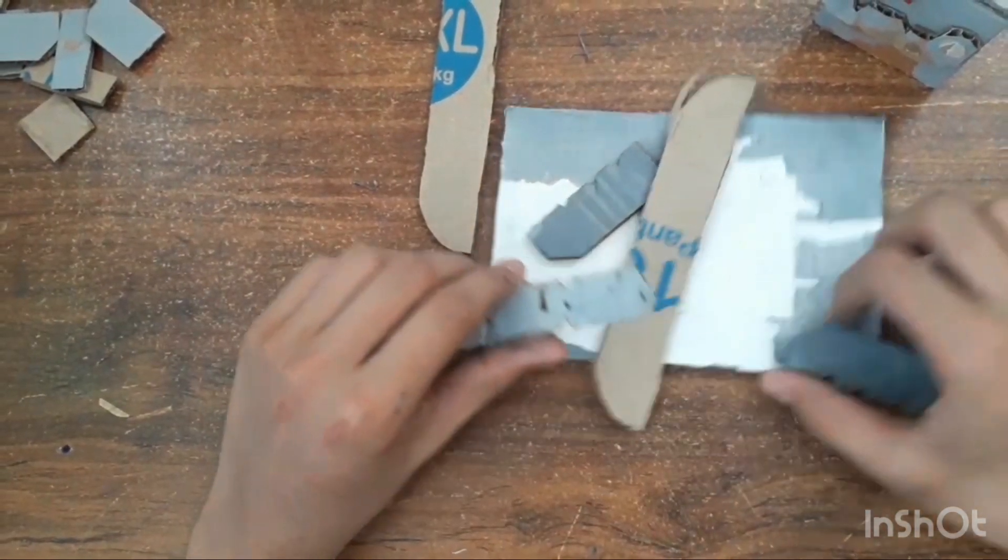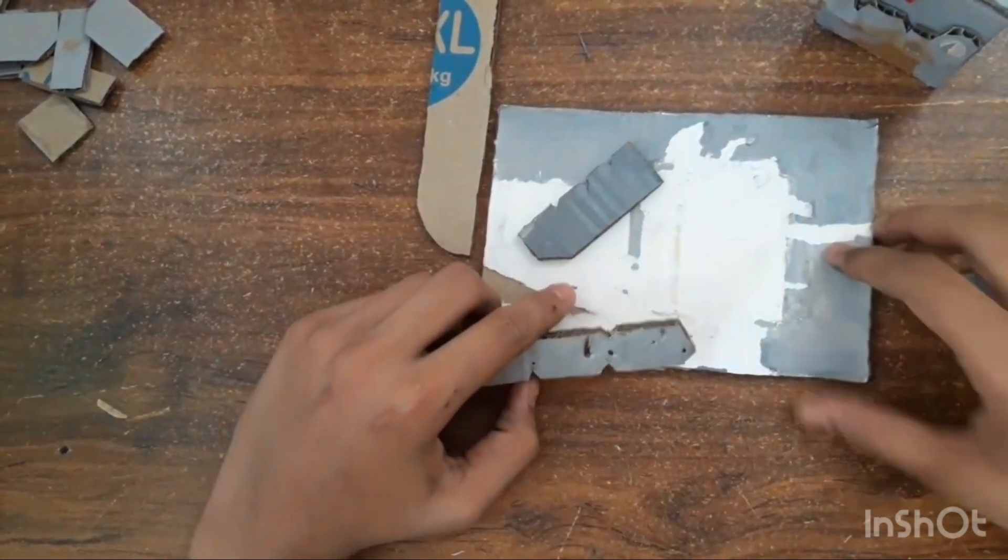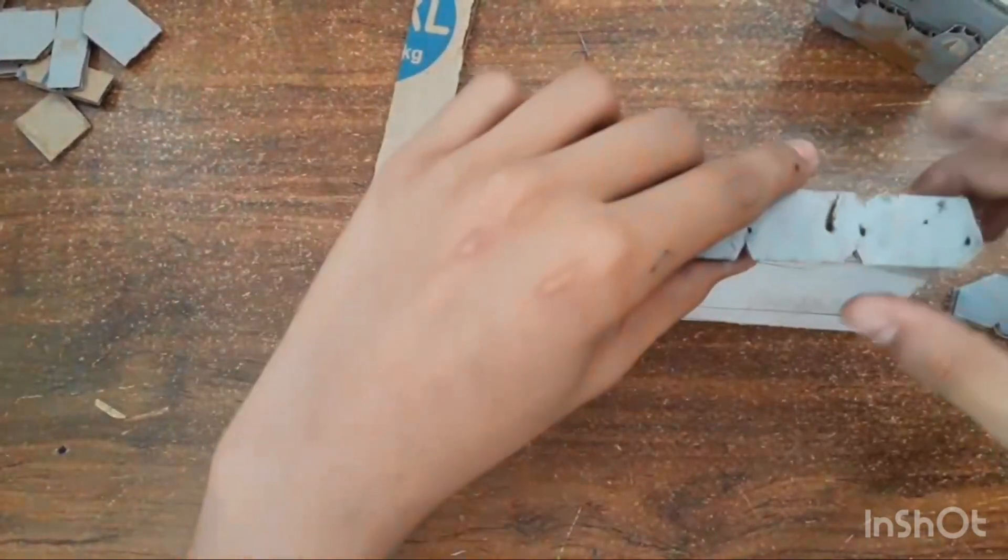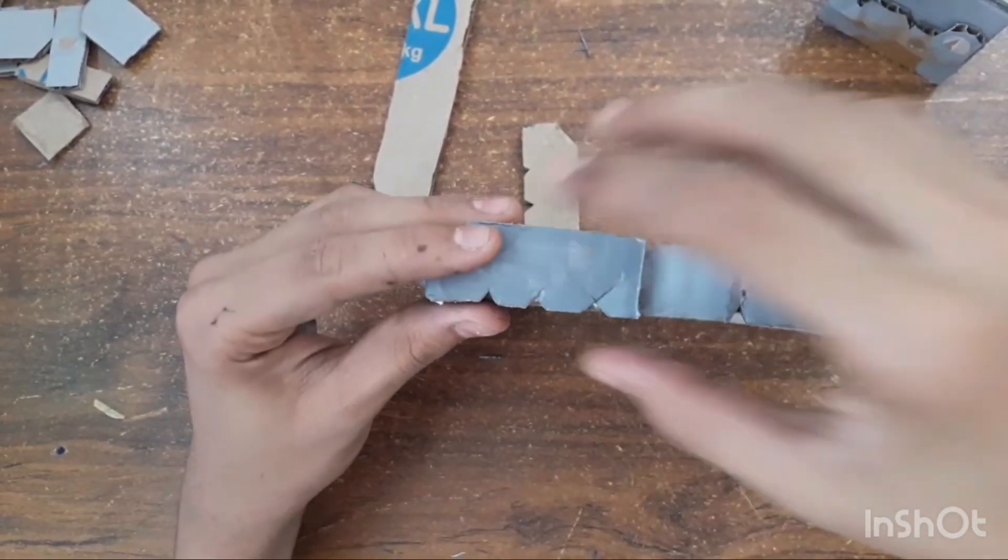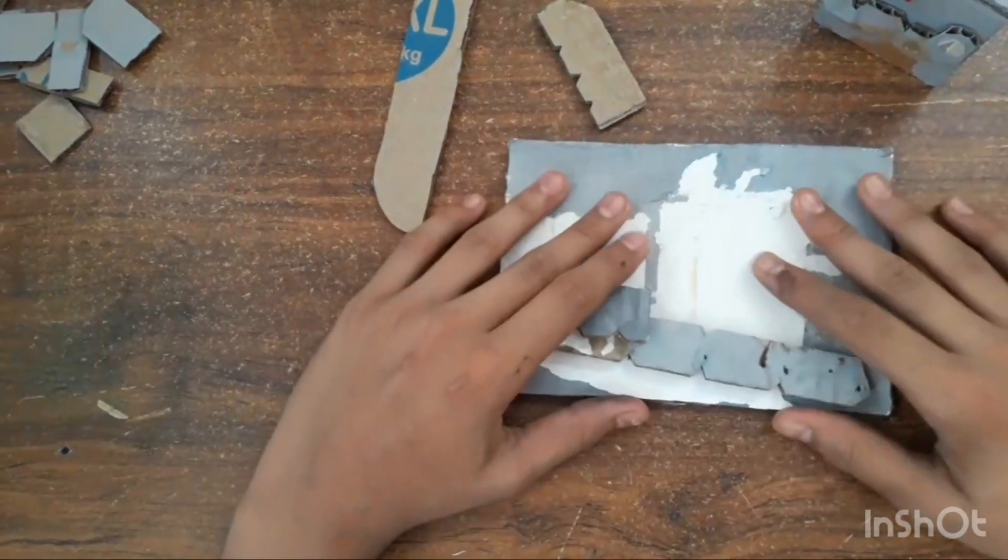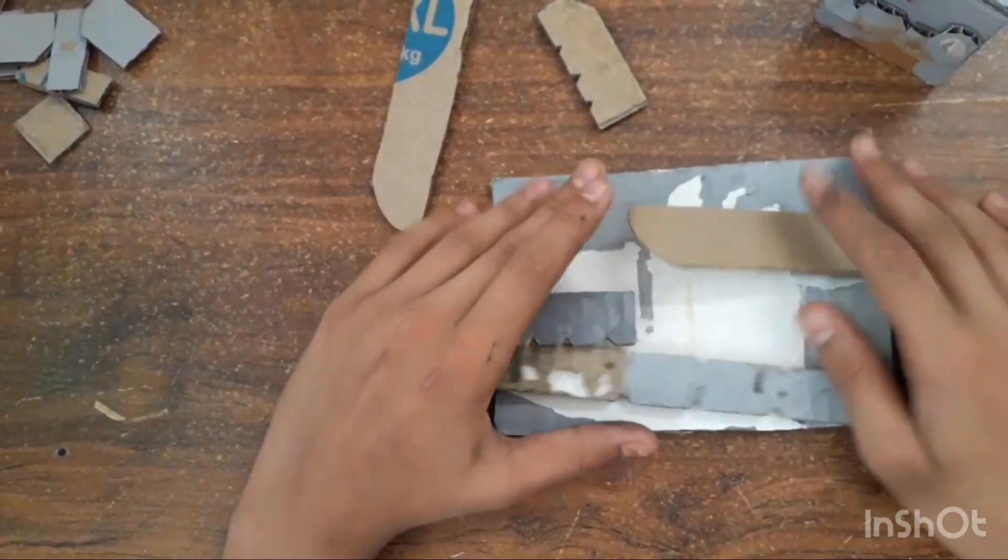Now we will make the body and tracks. Here are the pieces, and glue them together like this. Now the body is completed too.